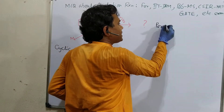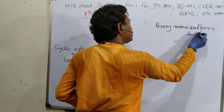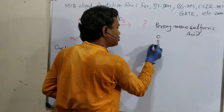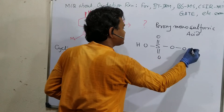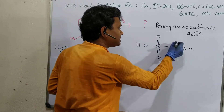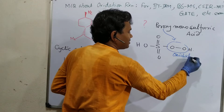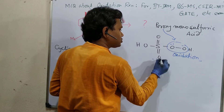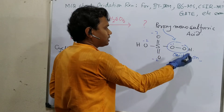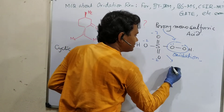This reagent is peroxy monosulfuric acid. From the name 'monosulfuric acid' you may understand it's a monobasic acid. And why 'peroxy'? Because it has a peroxy linkage attached. The formula is H2SO5. The interesting point is that this peroxy linkage is responsible for oxidation. It is at a minus-1 oxidation state while the rest are minus-2 oxidation states. So it will take electrons — it will oxidize the ketone and itself will be reduced to sulfuric acid.